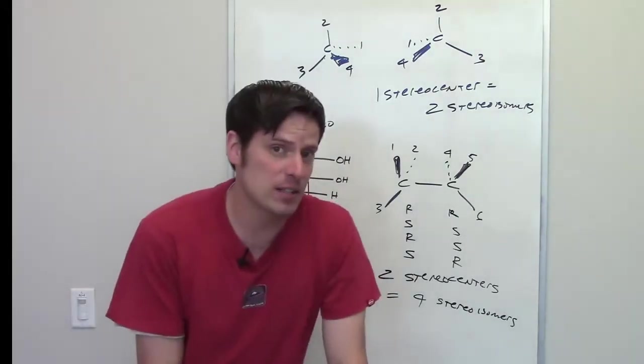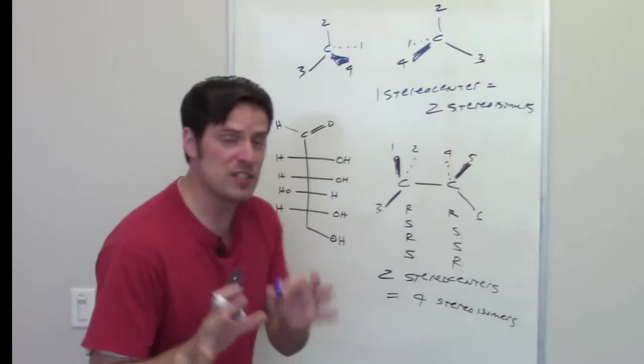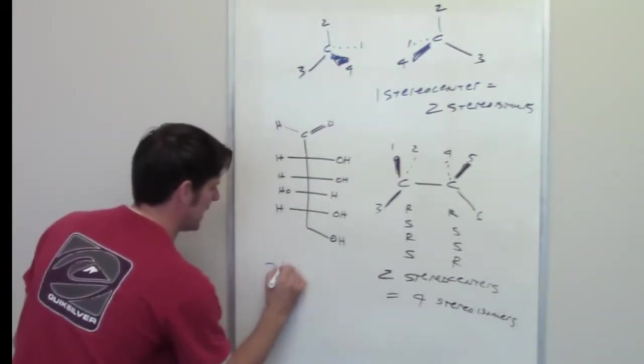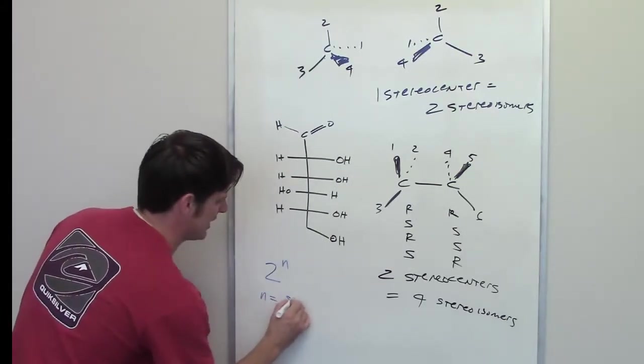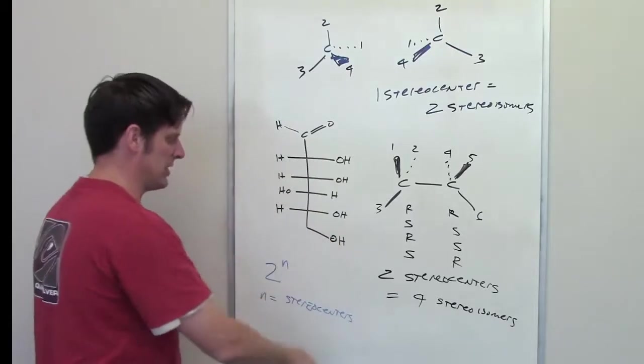Are you guys seeing a pattern? The pattern is this. The number of total stereoisomers you can have is two to the N, where N is the number of stereocenters.